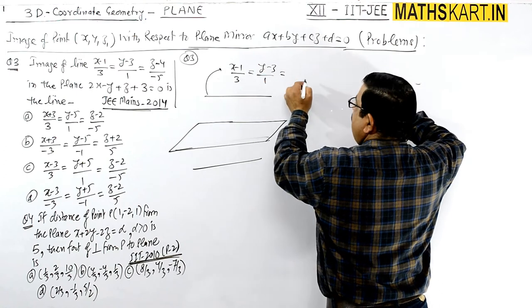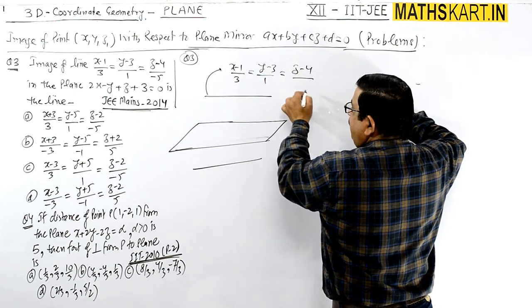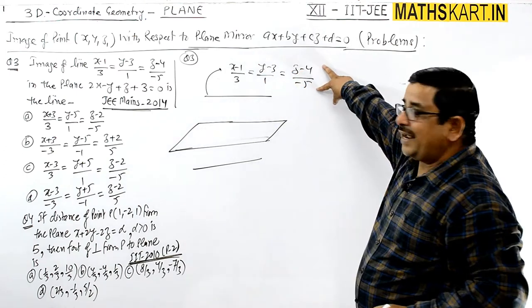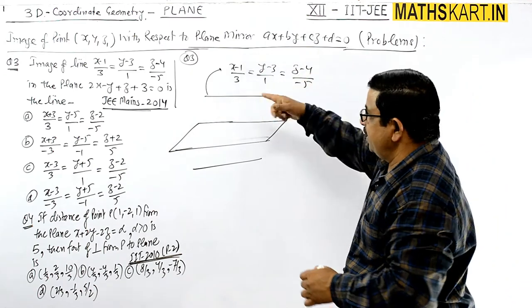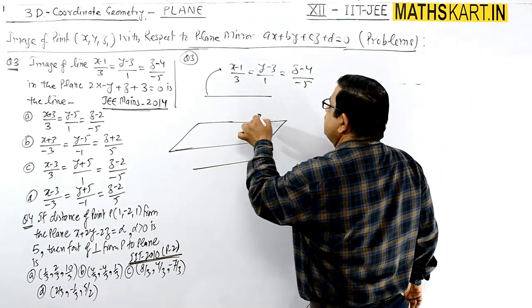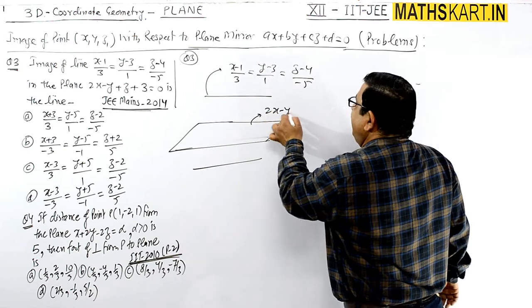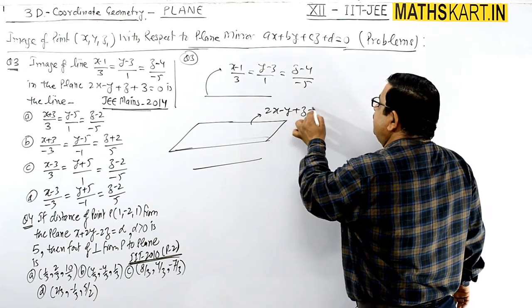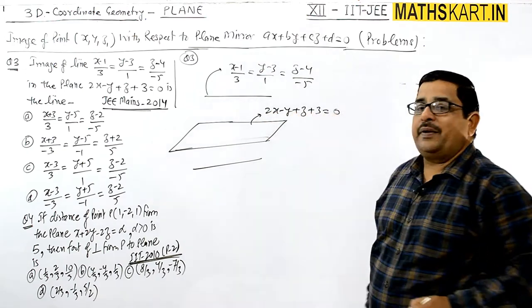This line is given as (x-1)/3 = (y-3)/1 = (z-4)/(-5). Suppose this line is given, and this plane is given as 2x - y + z + 3 = 0.